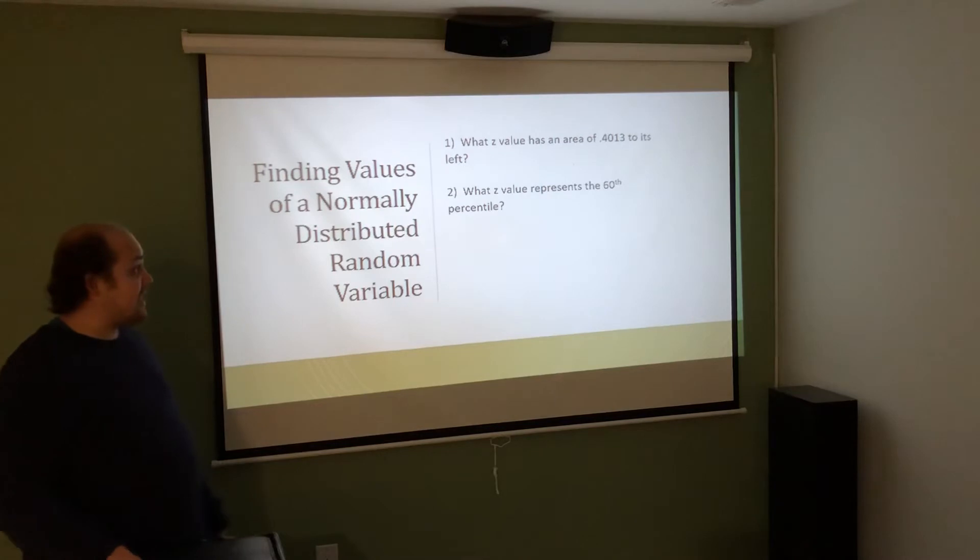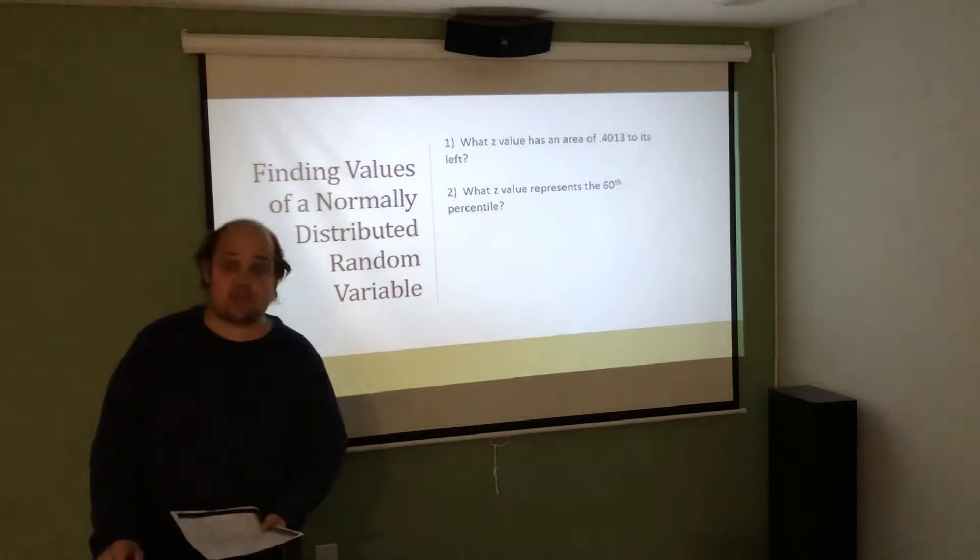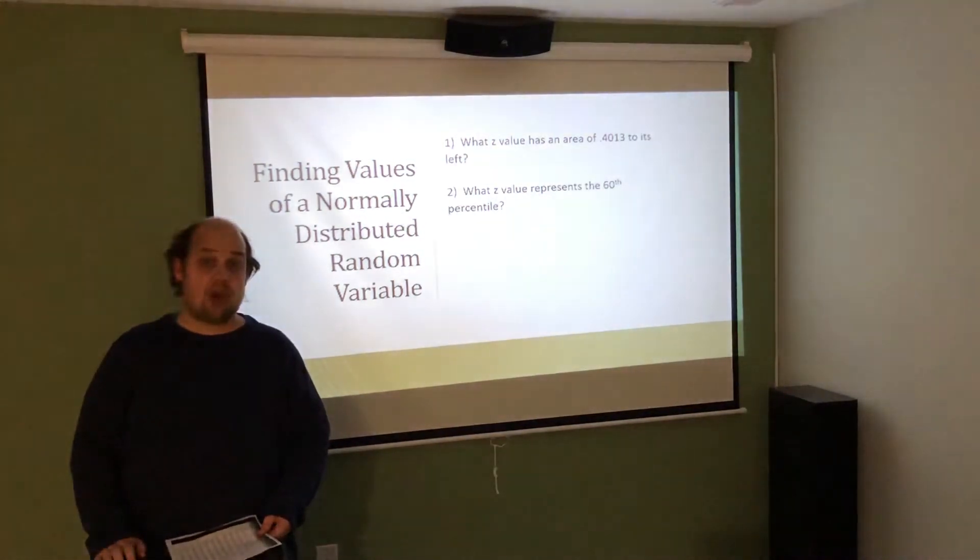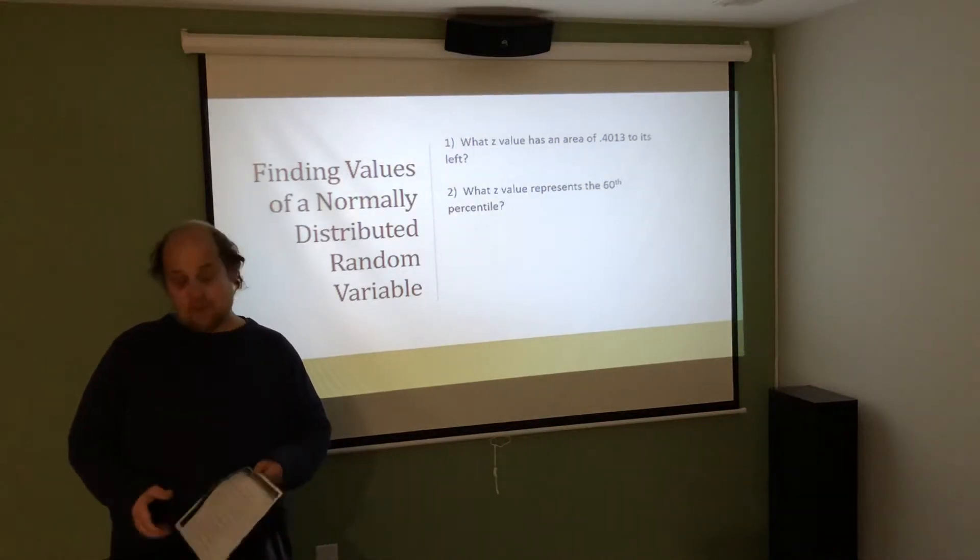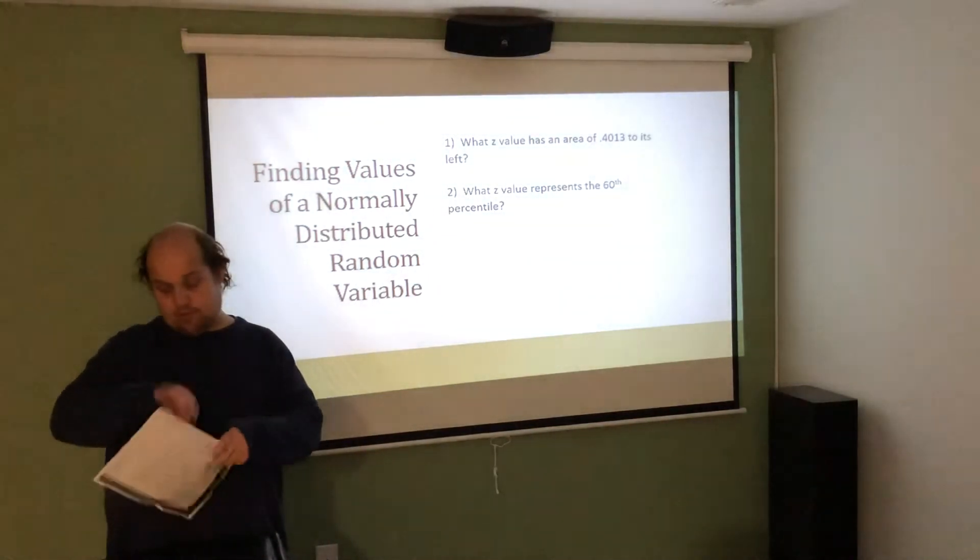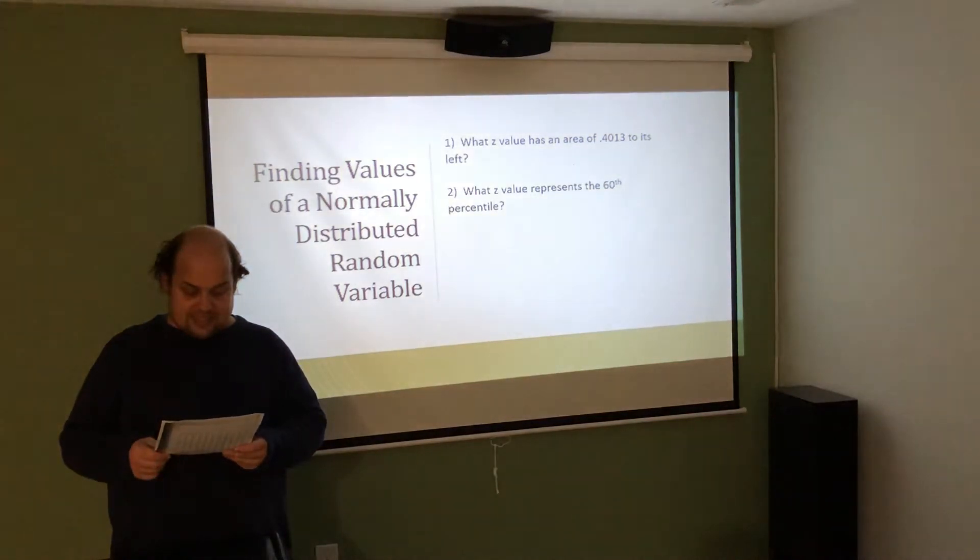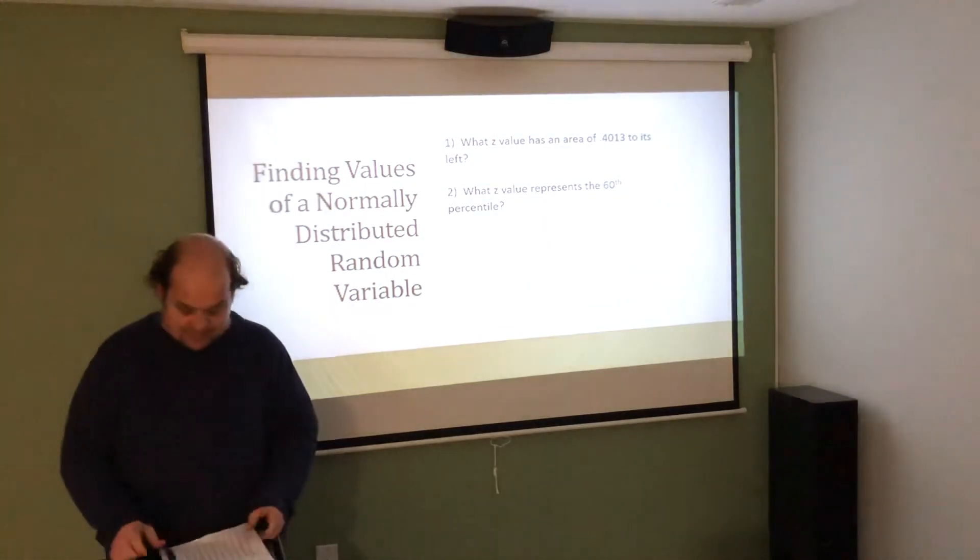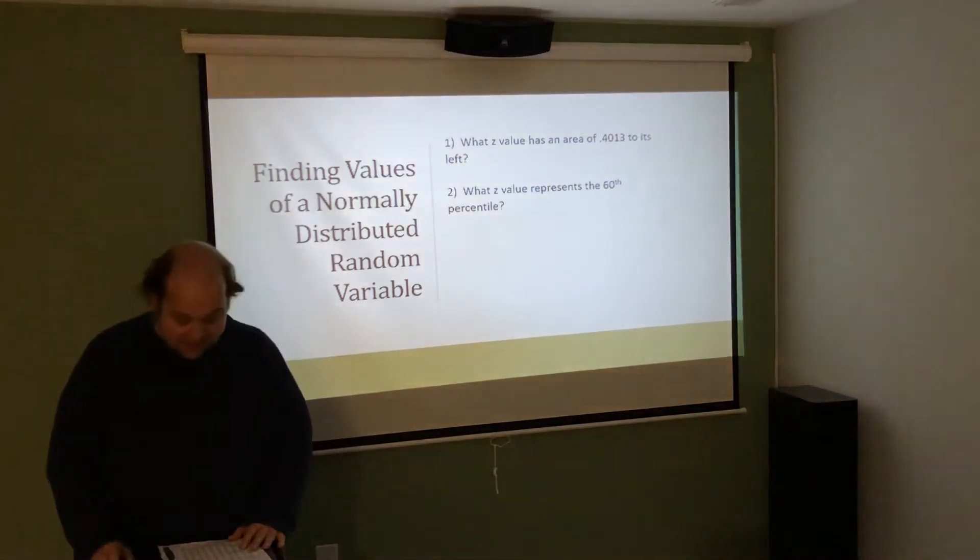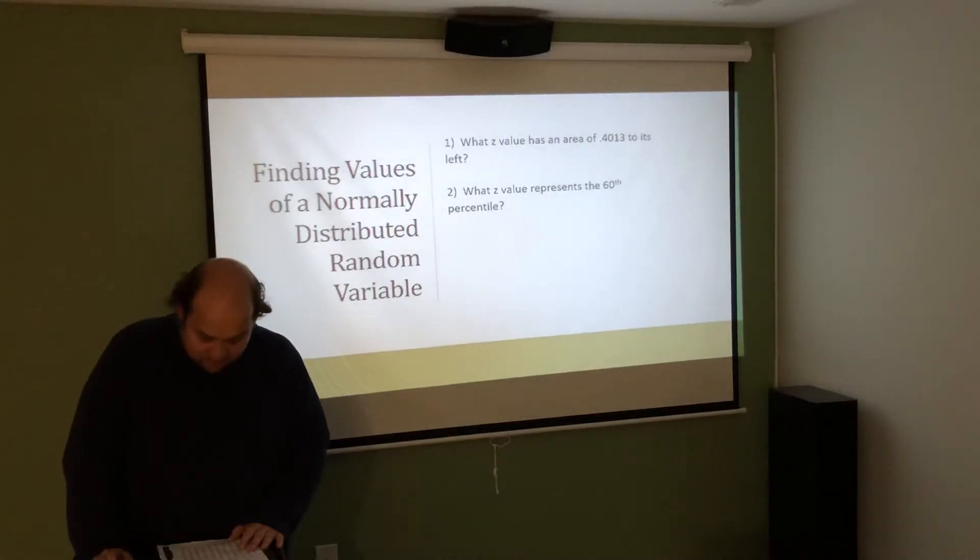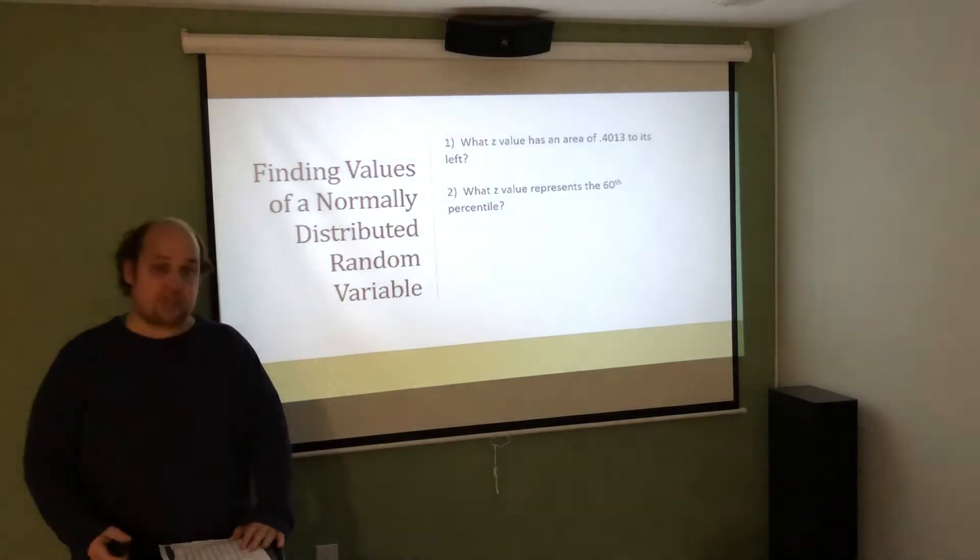What Z value represents the 60th percentile means we're looking in the center of the table for 0.6000. That would be on the positive side of my table. Where I see the thing closest to 0.6000 is right around 0.25 or 0.26. 0.25 gets me to a value of 0.5987, and 0.26 gets me to a value of 0.6026. So I think the closer one would be 0.25.